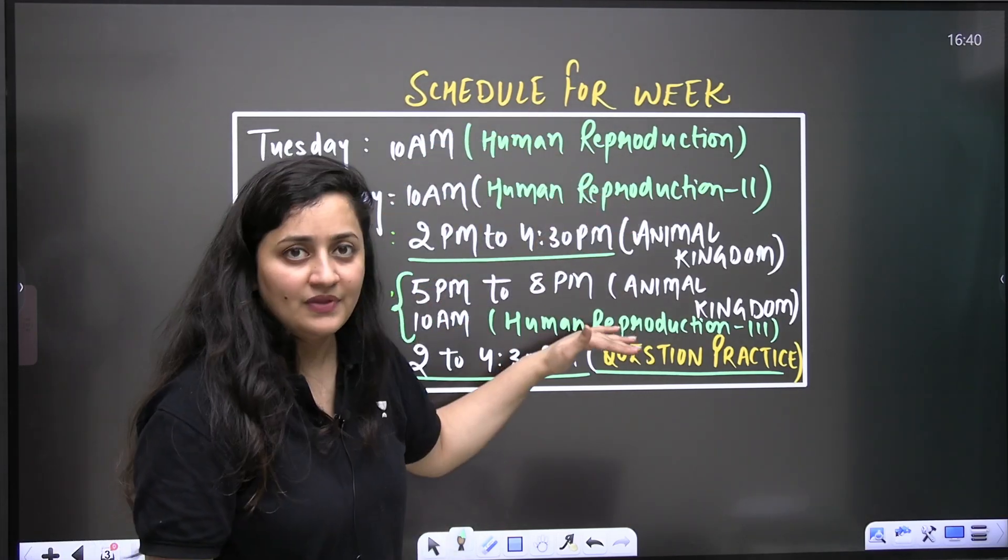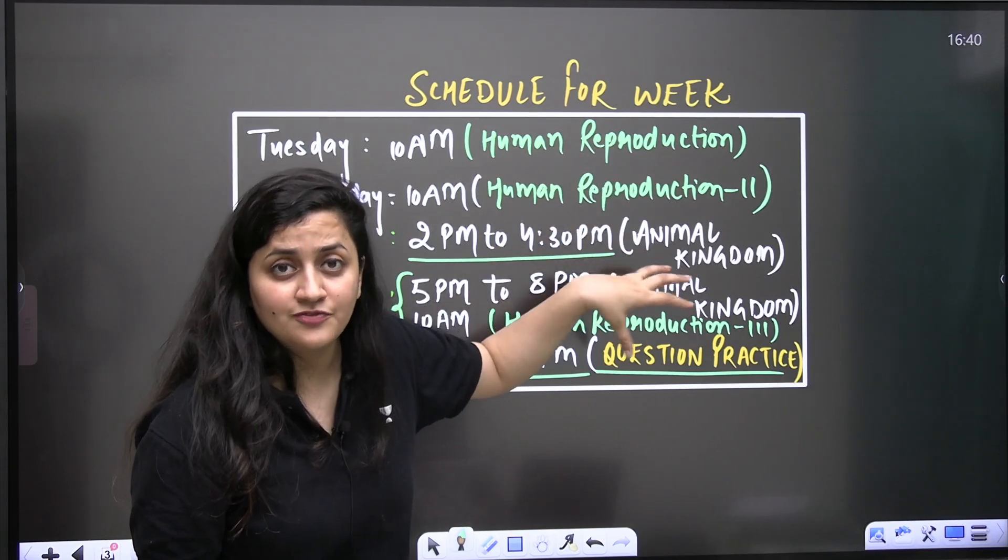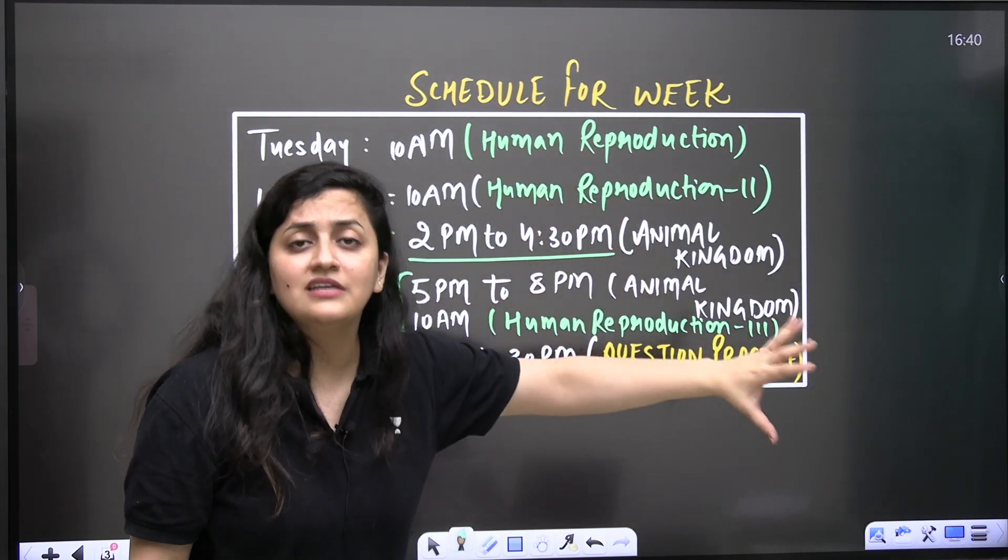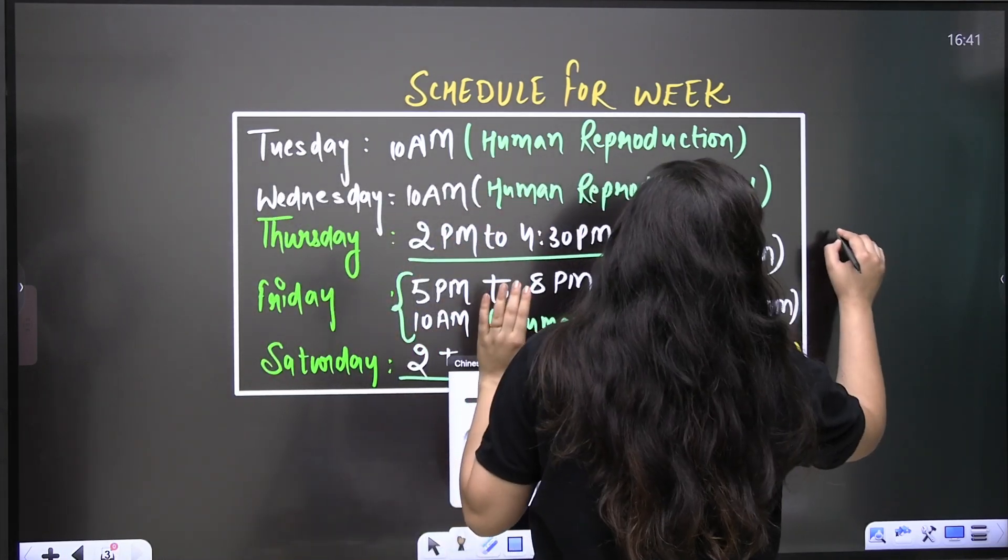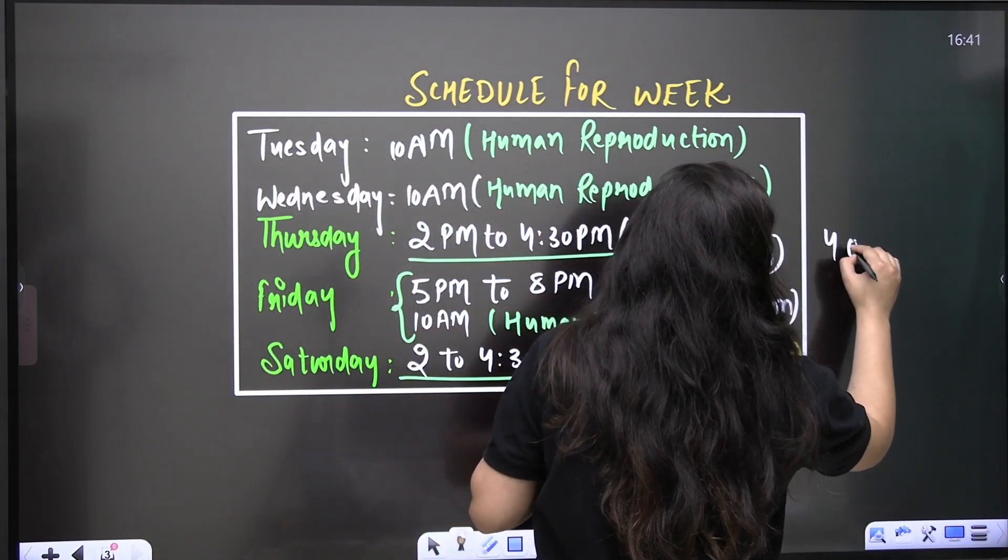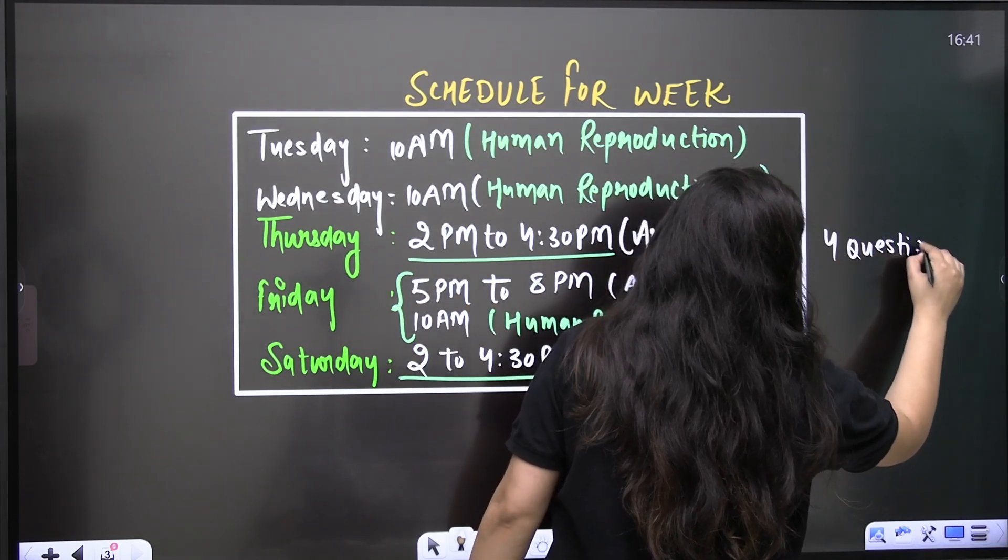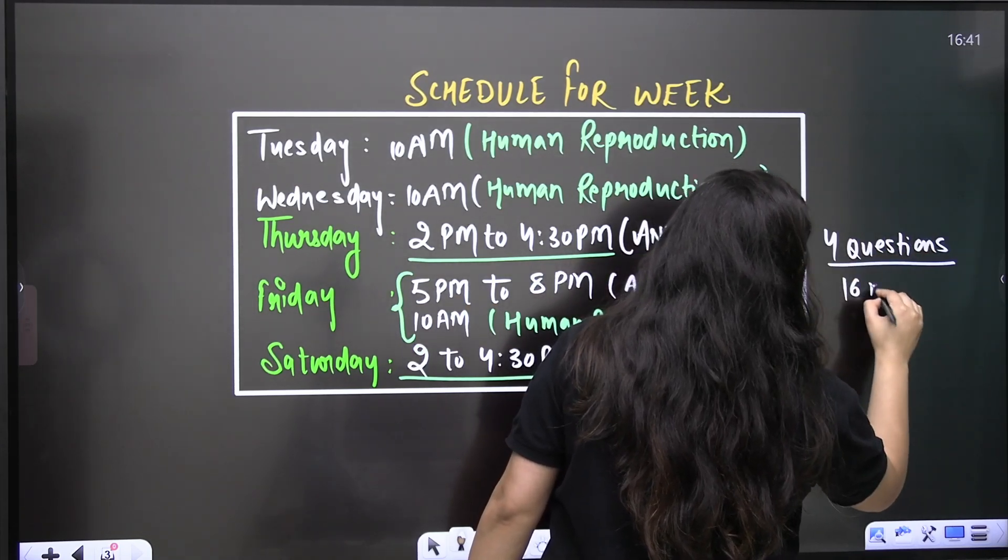And here, even if I am going to get good response from you, even I will increase the number of classes and we will finish our syllabus as soon as possible. So now you can see animal kingdom. From this chapter 4 questions you people can expect. So 4 questions means 16 marks.